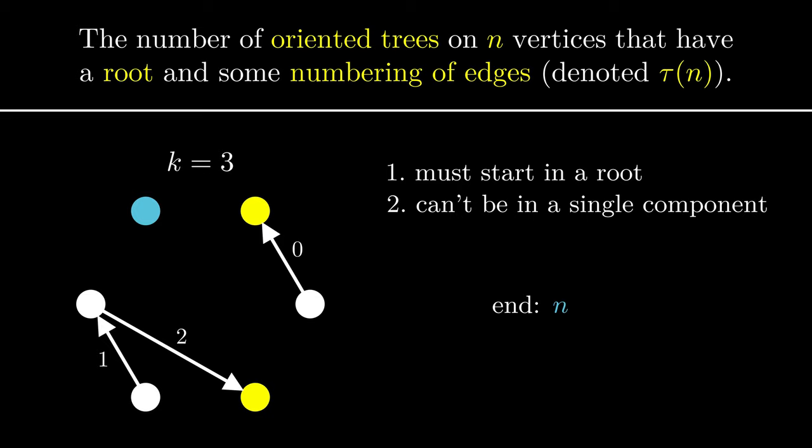This means that from the n-k components that we currently have, it can only start in n-k-1 of them, since one is reserved for the end. To build the entire tree, all n-1 edges must be added.